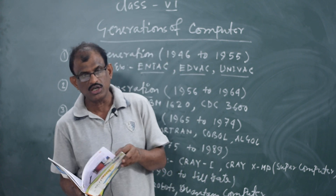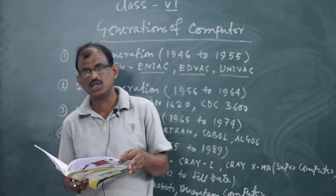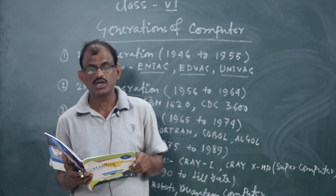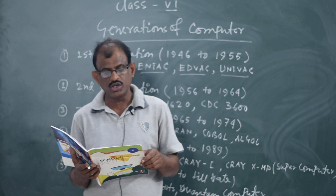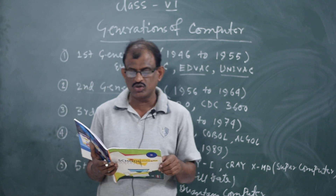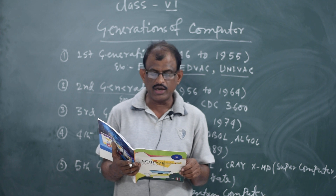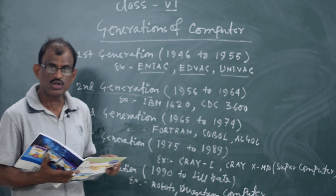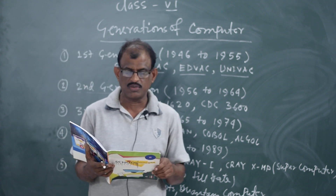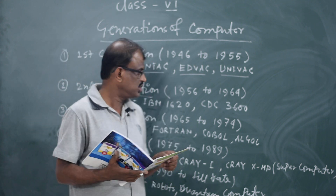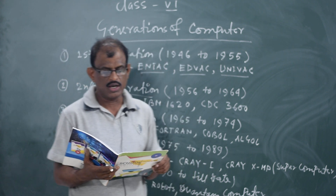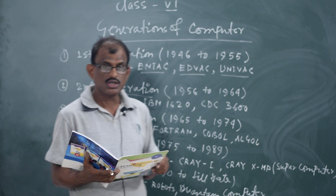Power consumption was reduced. These generation computers used real time, time sharing, and distributed operating systems. The programming language used is C++. Examples include supercomputers like Cray XMP.